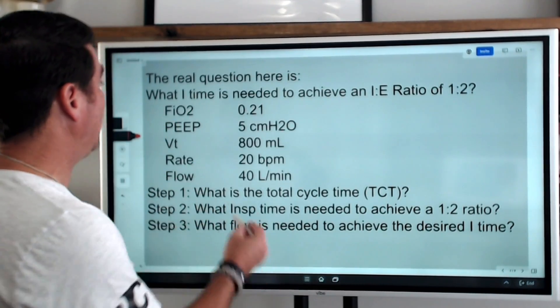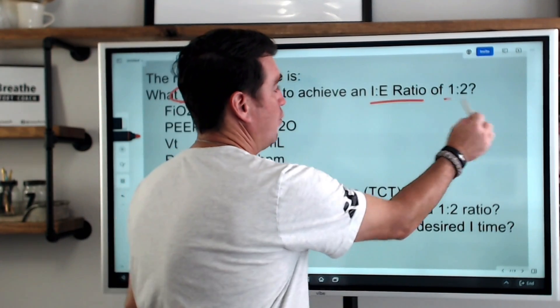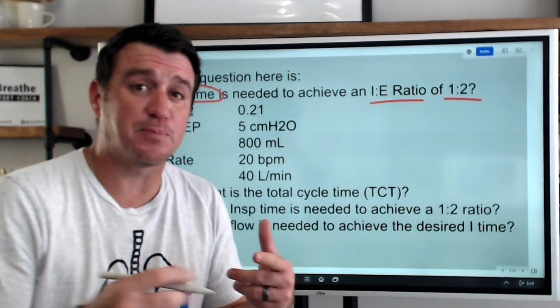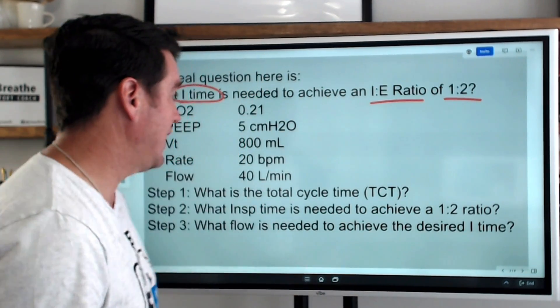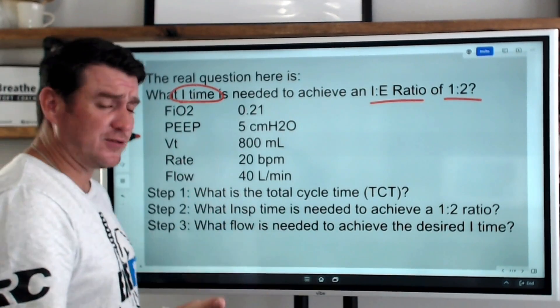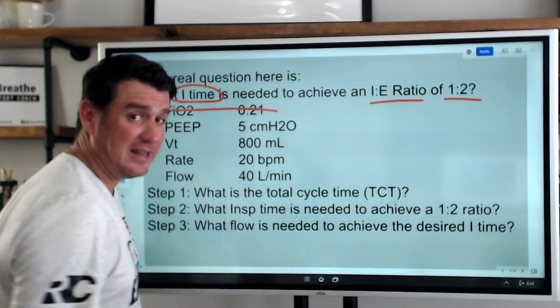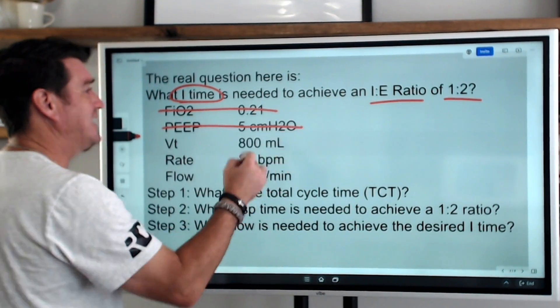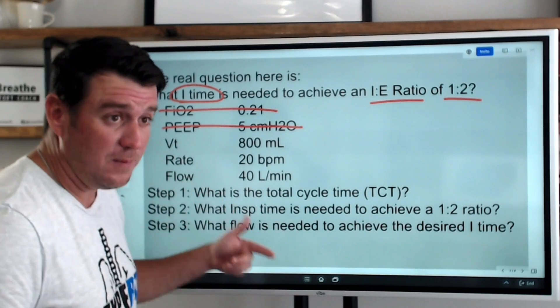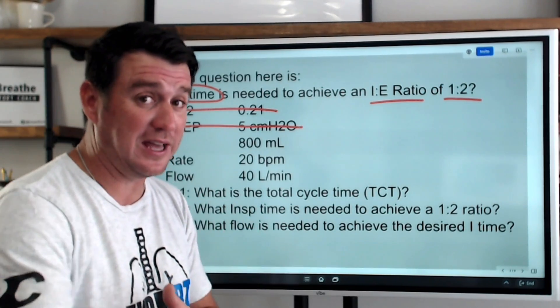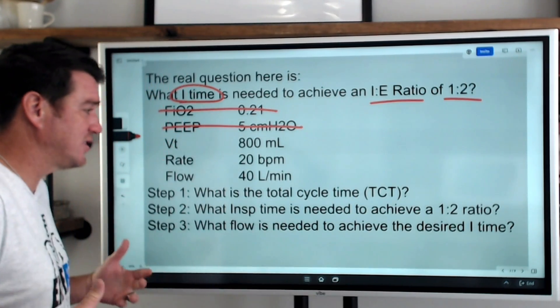Let's break it down though and see really how to answer this question and understand what this question is asking. The real question here is what I time is needed to achieve the I to E ratio of one to two. You see, the problem is that we don't have the right I time. That's why we can't get a one to two. So we're going to have to change something. Right off the bat, anytime you're asked this question, you can mark out FiO2. It has nothing to do with I to E ratio. PEEP has nothing to do with I to E ratio. Now these other three, tidal volume, rate, flow, 100% directly related to I to E ratio, and we're going to have to keep them in play.